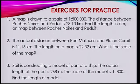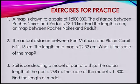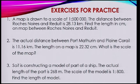Now, these are a few exercises for you to practice. Question 1: A map is drawn to a scale of 1 is to 500,000. The distance between Roche-Noir and Reduit is 28.13 km. Find the length in cm on the map between Roche-Noir and Reduit. Question 2: The actual distance between Port Maturay and Plain Corail is 11.16 km. The length on a map is 22.32 cm. What is the scale of the map?